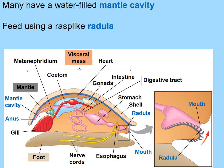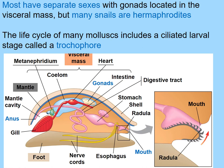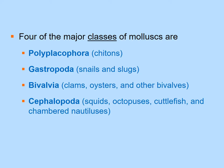Most mollusks have separate sexes with gonads in the visceral mass, though some are hermaphroditic. Many pass through a trochophore larval stage. There are four major mollusk classes: Polyplacophora (chitons), Gastropoda (snails and slugs), Bivalvia (clams, oysters, mussels), and Cephalopoda (squid, octopus, cuttlefish, nautilus).